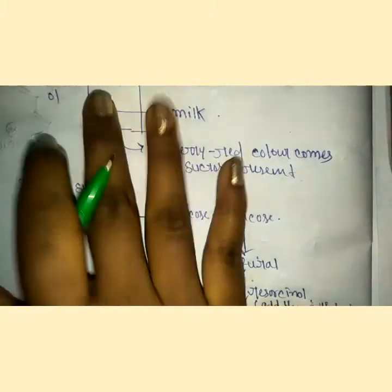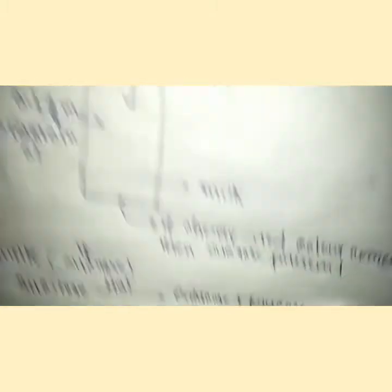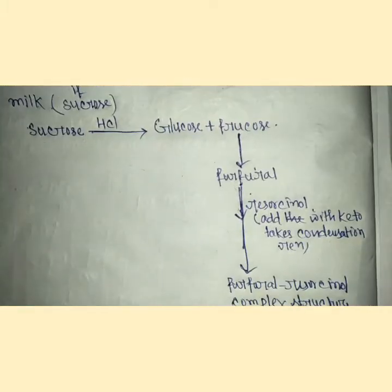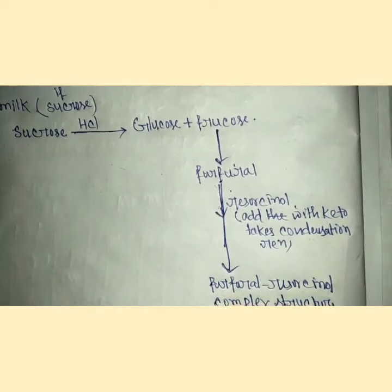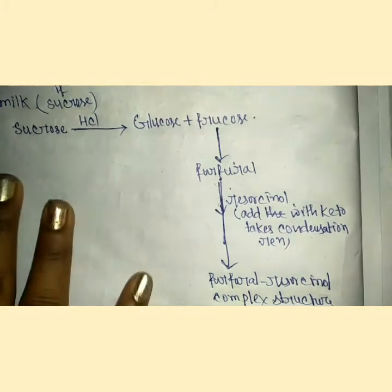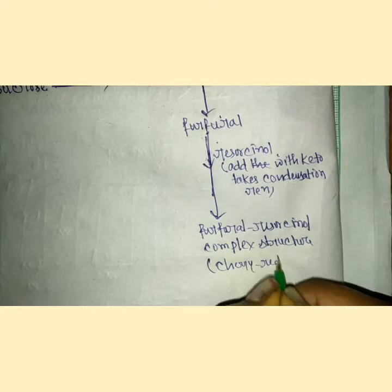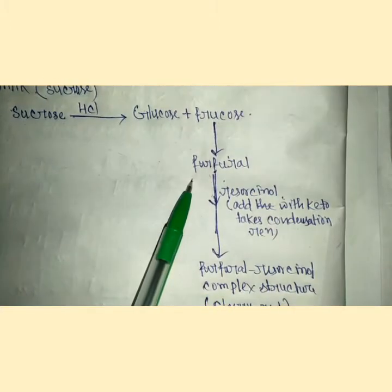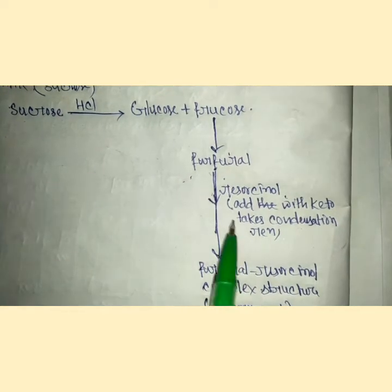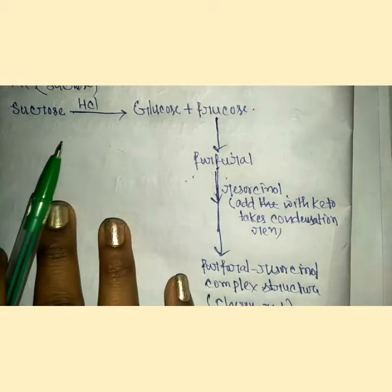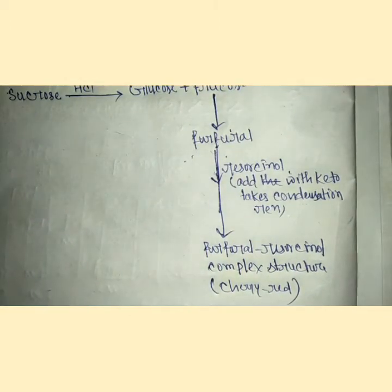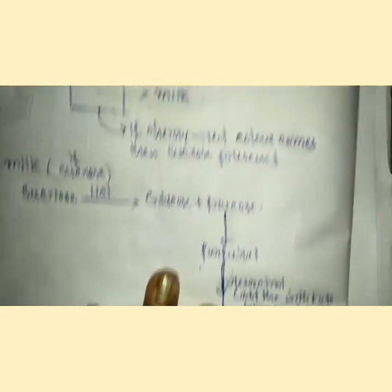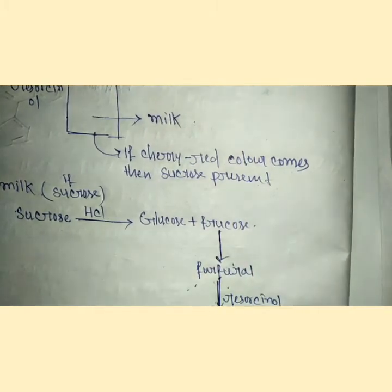This is the overall experiment and mechanism. This complex has cherry red color. If sucrose is present, furfural will be produced, and after adding resorcinol, this complex will produce cherry red color. If sucrose is not present, this experiment will not work and no cherry red color appears. If cherry red color comes, then sucrose is present. So it is a qualitative method.